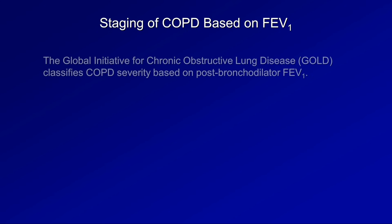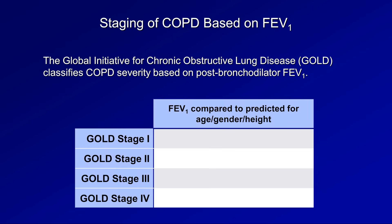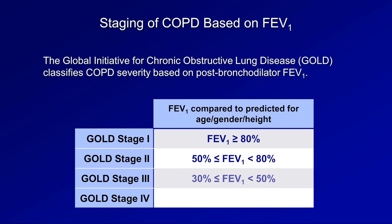The Global Initiative for Chronic Obstructive Lung Disease (GOLD) classifies COPD severity as follows: Stage 1 means FEV1 is greater than or equal to 80% (normal); Stage 2 means FEV1 falls between 50 and 80%; Stage 3 is between 30 and 50%; and Stage 4 is below 30%.